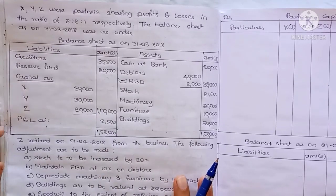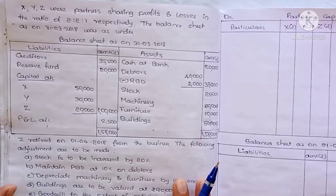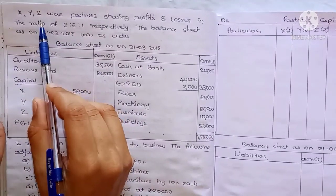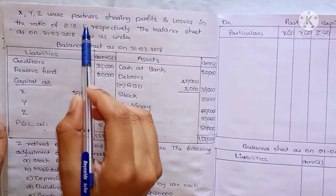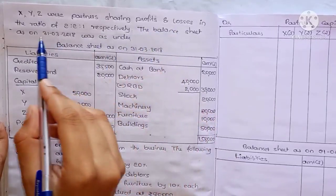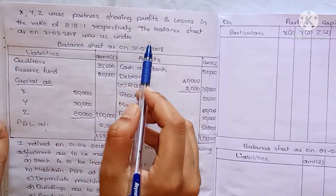One problem is easy, and the third problem from the question bank is: XYZ were partners sharing profits and losses in the ratio 2 to 2 to 1 respectively.